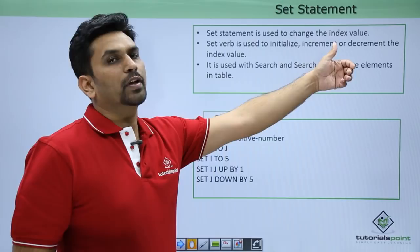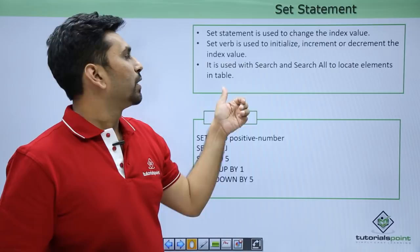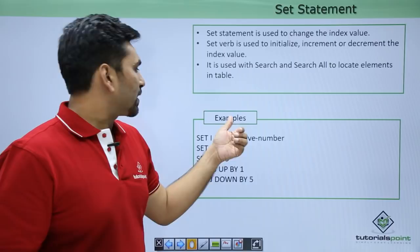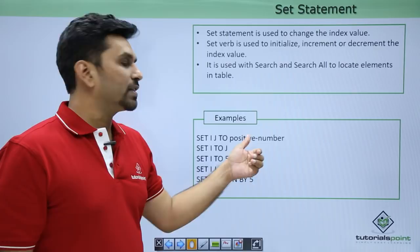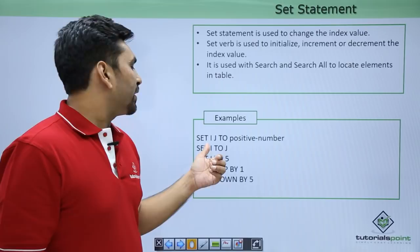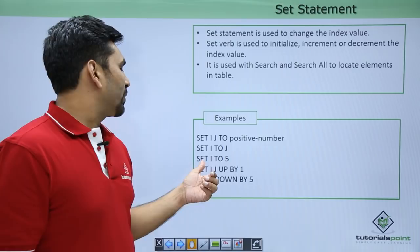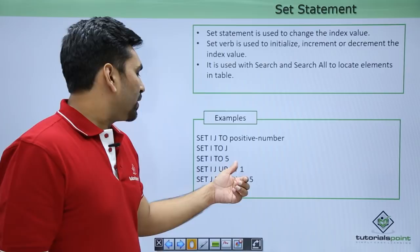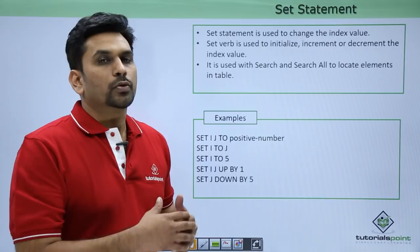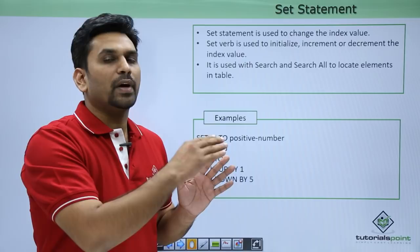The SET statement is used to change the value of an index. The SET verb is used to initialize, increment, or decrement the index value, and it is used with SEARCH and SEARCH ALL to locate elements in a table. Examples: SET I J TO a number sets both I and J to that number; SET I TO J copies J into I; SET I TO 5 sets I to 5; SET I J UP BY 1 increments both by 1; SET J DOWN BY 5 decrements J by 5.